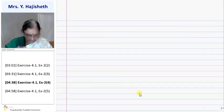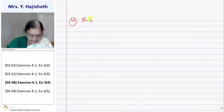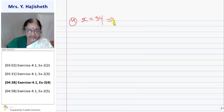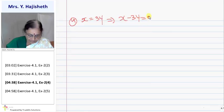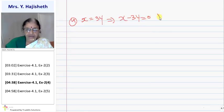Fourth question is x equals three y. It is not in general form. I write it as x minus three y equals zero. Here a is one, b is minus three and c is zero.